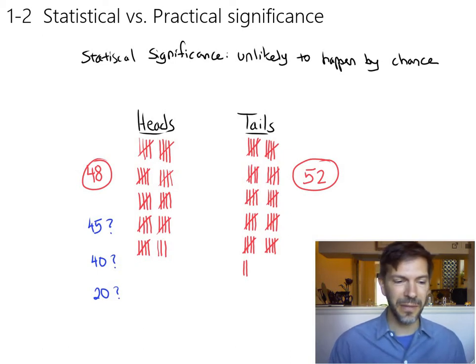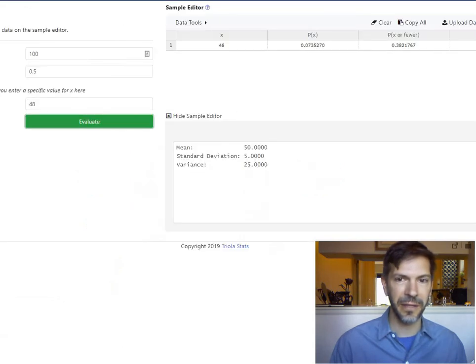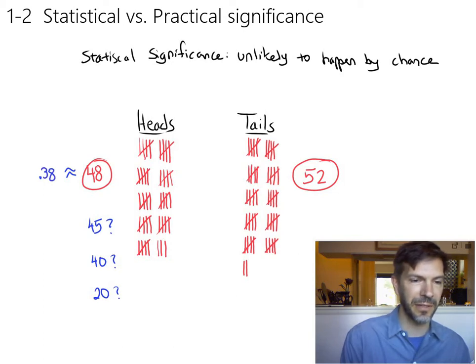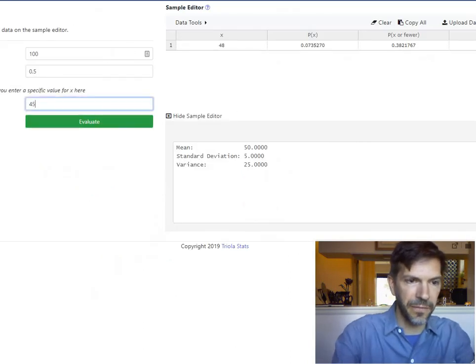And again, as we go on, we'll be able to figure out the probabilities for all these things. So I already said to get 48 heads, the probability of that's around 38%. So we'll use a decimal 0.38 or you can call it 38%. Let's look at 45.